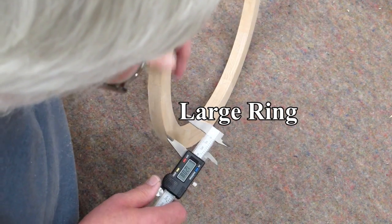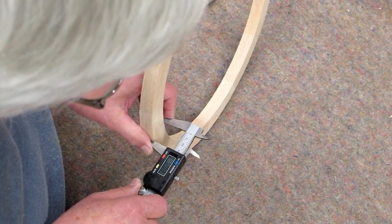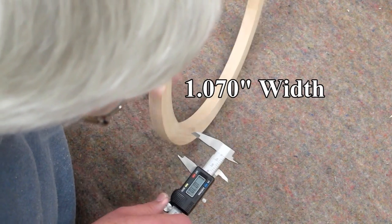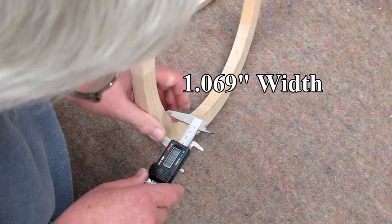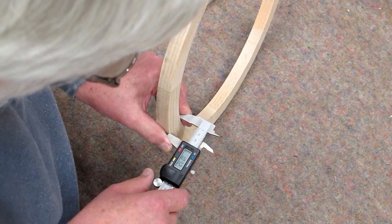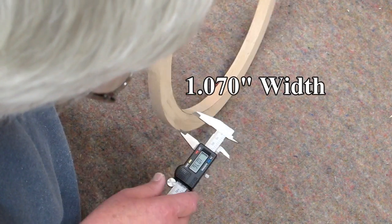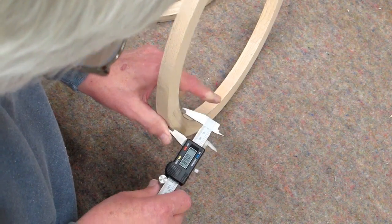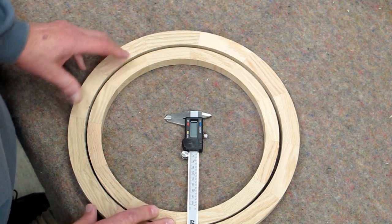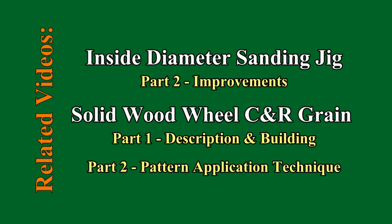Measurements on the larger ring, 107.0, 106.9, 107.0, 106.9. They're not perfect, but they're pretty close.